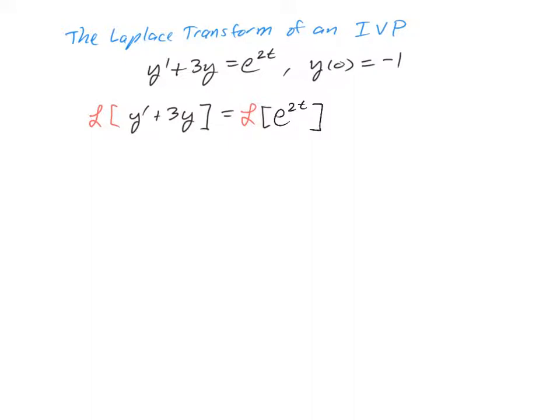Now we're going to use linearity to take the Laplace transform of these terms and do them one by one. Typically people don't write all these steps, but we'll do this for our first example. This is the Laplace transform of y prime plus 3 times the Laplace transform of y, and that equals the Laplace transform of e to the 2t.